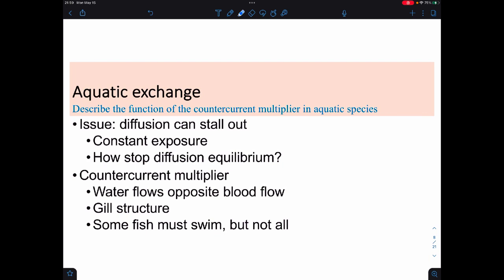Inside of aquatic systems, it turns out diffusion is a problem, because there's only so much oxygen inside of water. So what we have to do is avoid what we call a diffusion equilibrium. And the mechanism that we're going to use to do this is called countercurrent multiplier. And this is when water is going to flow in the opposite direction as blood. And we actually see this in gill structures, and we're going to see it in a few other structures later on, too.